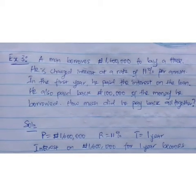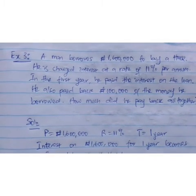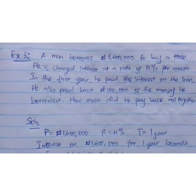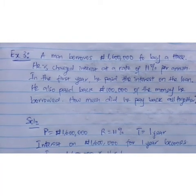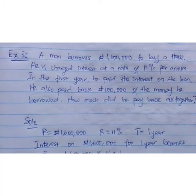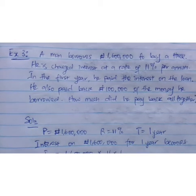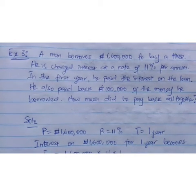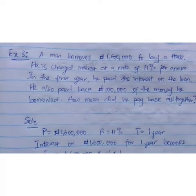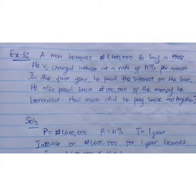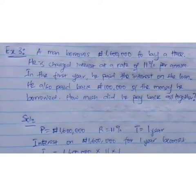Example 3: A man borrows 1,600,000 naira to buy a house. He is charged interest at a rate of 11% per annum. In the first year, he paid the interest on the loan. He also paid back 100,000 naira of the money he borrowed. How much did he pay back altogether?